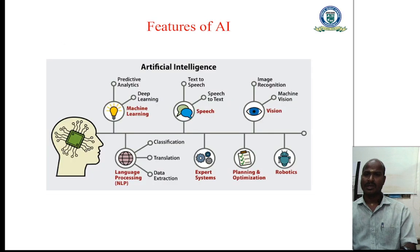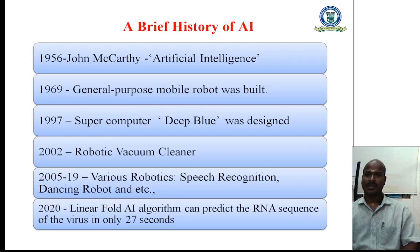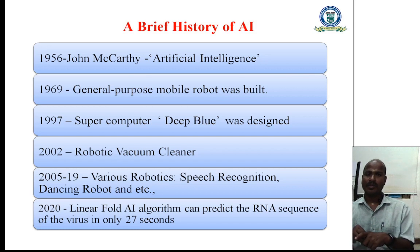The features of artificial intelligence also include machine learning, speech recognition, vision, language processing, expert systems, planning, optimization, and robotics. These are the features of artificial intelligence. Then we go to see the brief history of artificial intelligence.